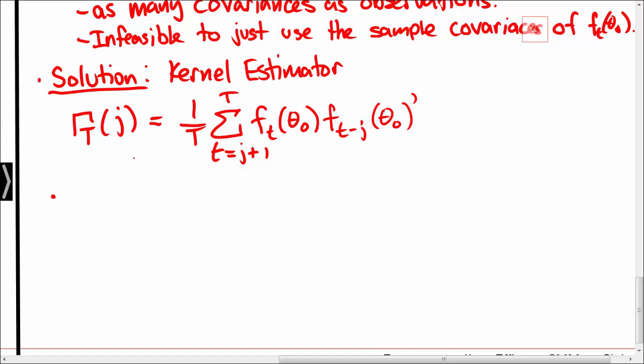Instead we will base our estimator on this γtj and assume that for j sufficiently large, when the distance between Ft and Ft-J is quite large in terms of time, we can simply ignore the covariance. We should only put some weight on observations that are close to each other.